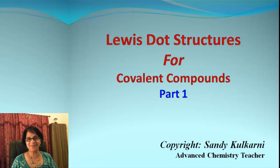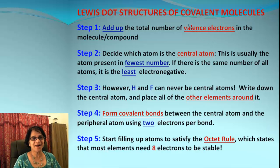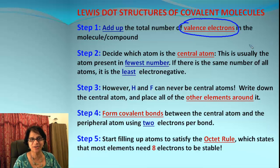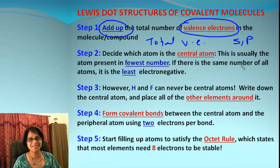Hey kids, Miss Kulkarni here. In this video, let's find out how to draw Lewis dot structures for covalent compounds. There are many rules and many steps. Step number one: we need to find out valence electrons for every element present in that particular molecule. Valence electrons, if you remember, are S and P electrons — not D and F. Then we add up all the electrons and get the total number of valence electrons for all the elements in that molecule.